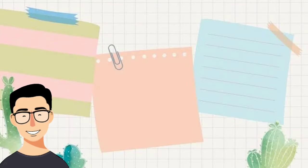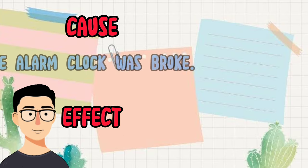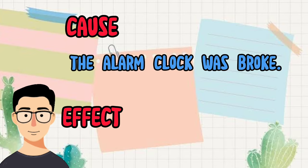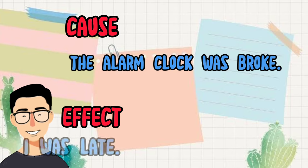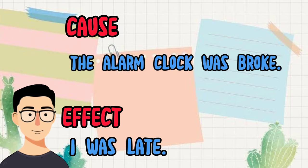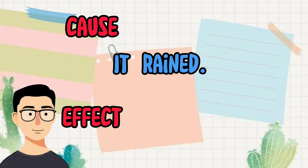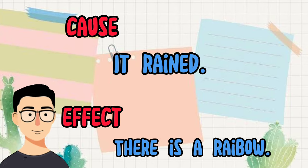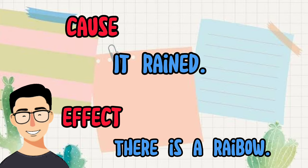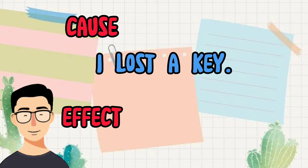Here are some examples of cause and effect. The alarm clock was broken — I was late. It rained — there is a rainbow. I got fish.